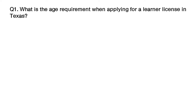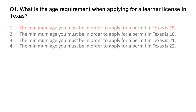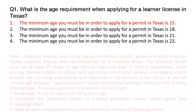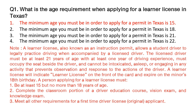The answer is option number 1: the minimum age you must be in order to apply for a permit in Texas is 15. Note: a learner license, also known as an instruction permit, allows a student driver to legally practice driving when accompanied by a licensed driver.